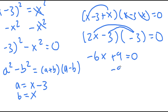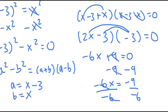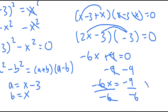So I subtract 9 on both sides, and I get negative 6x is equal to negative 9. Then I divide both sides by negative 6, and I get x is equal to 3 over 2.